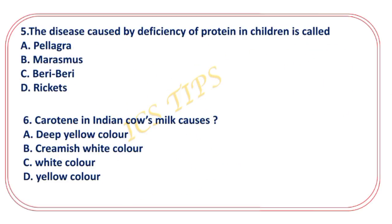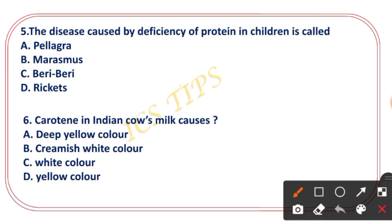What is carotin in Indian cow milk? The options are deep yellow color, creamish white color, white color, and yellow color. Since carotin is present in Indian cow milk, the right answer is option D — yellow color.